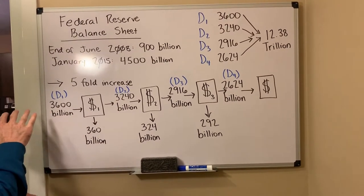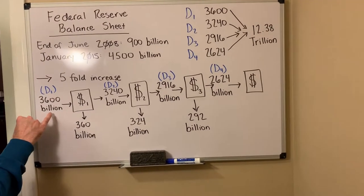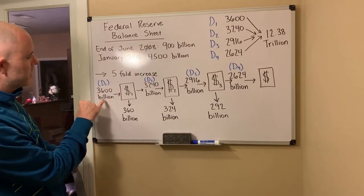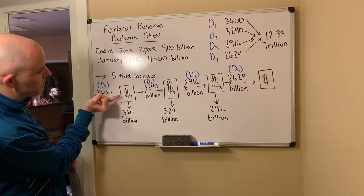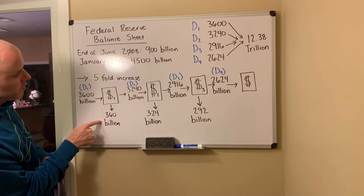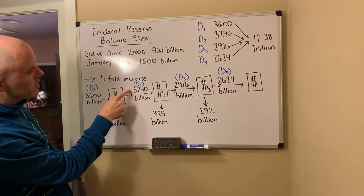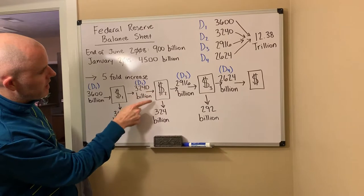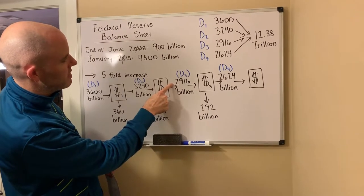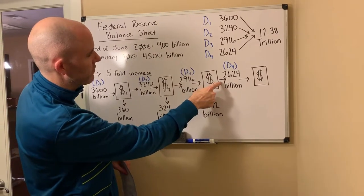So really quickly, we're going to run through the process of how credit is expanded and how the money supply grows. That initial creation of credit — the $3.6 trillion, or $3,600 billion — is deposited into bank number one. With the 10% rule, $360 billion is what they have to hold, so they're able to loan out $3,240 billion, which is then deposited in bank number two. Bank number two holds $324 billion, and $2,916 billion is deposited into bank number three, and there's the amount they have to hold and the amount of credit they can create.